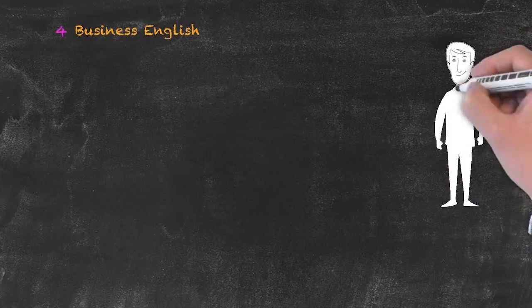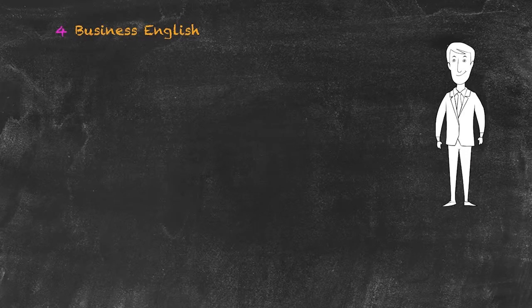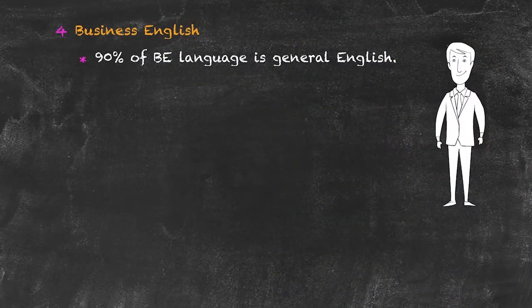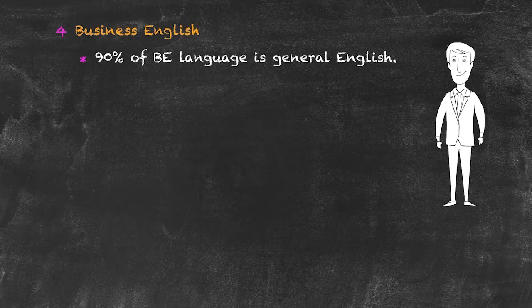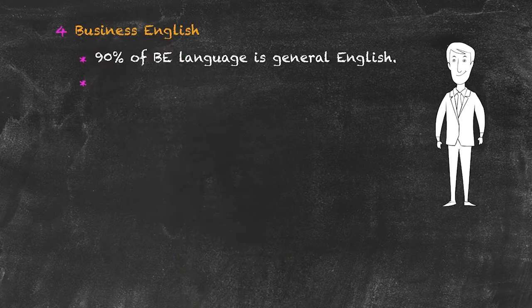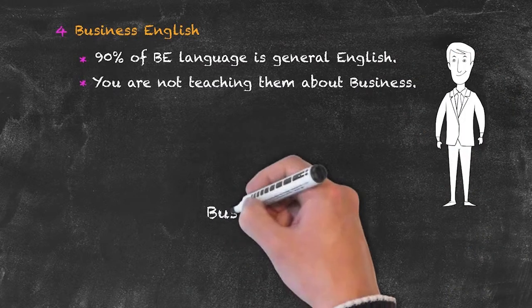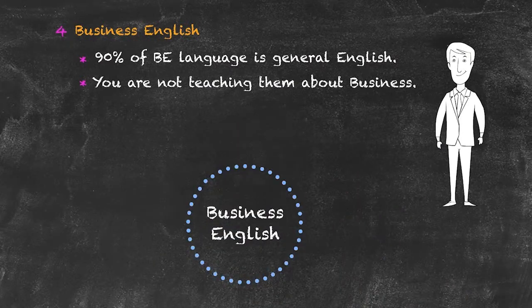The next category is English for specific purposes, with the main subcategory being business English. Many teachers worry they can't teach business English because they don't know about business — this is a misconception. About 90% of language used in any business English context is the same as in general English. Remember: you're not there to teach them about business; they already know that. You're there to teach them English.